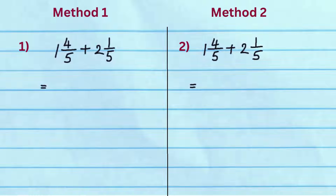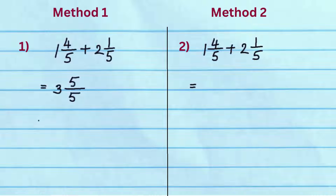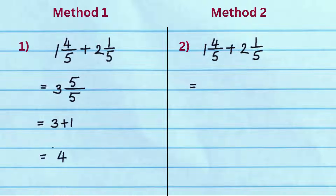In method 1 of this example, first we will add the whole numbers 1 and 2 to get 3. Keep the common denominator of the two fractions 5 as is. Add the numerators 4 and 1 to get 5. Fraction 5 by 5 can be reduced to 1. Add whole number 3 and 1 to get the answer 4.